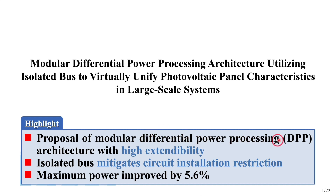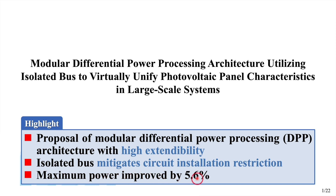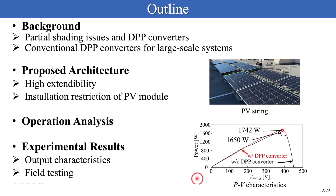To solve this problem, differential power processing DPP converters have been proposed. In this presentation, I will propose a modular DPP architecture with an isolated bus for large-scale systems. The proposed architecture achieves high extendability, and isolated buses mitigate circuit installation restrictions. From the experimental results, maximum power improved by 5.6%.